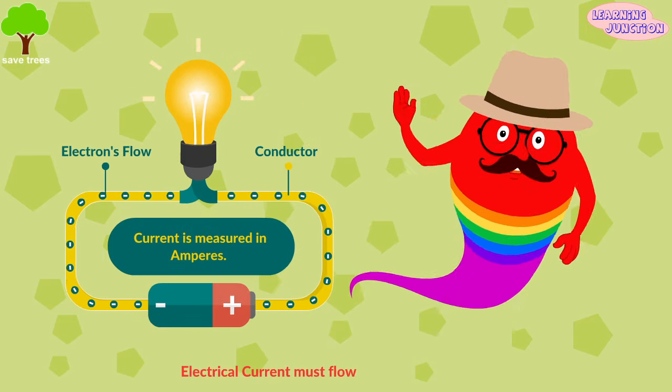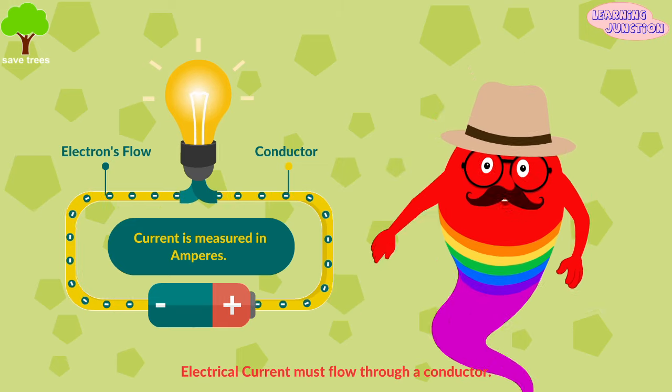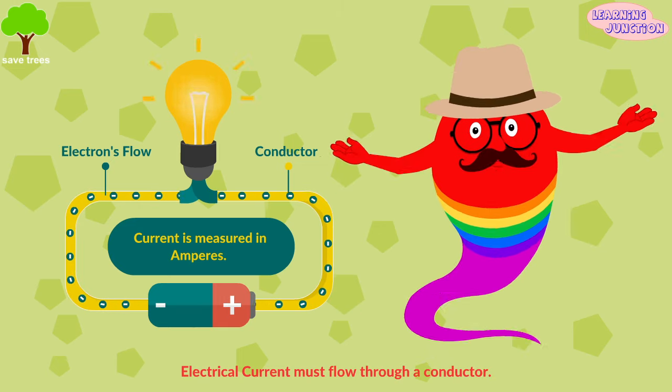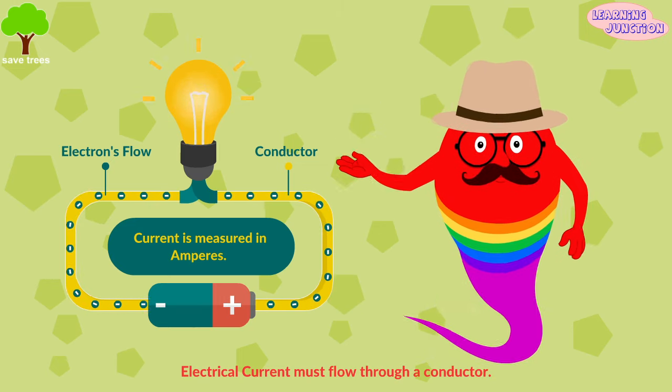Unlike static electricity, electrical current must flow through a conductor, usually copper wire.